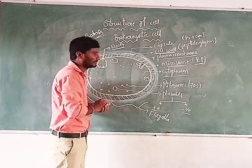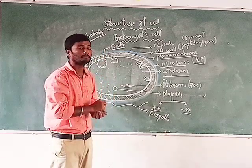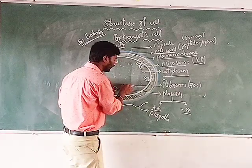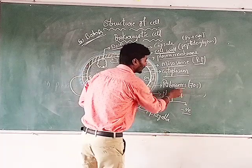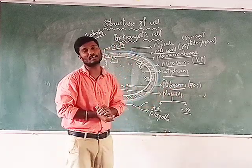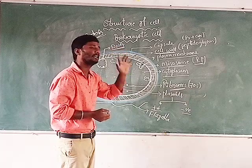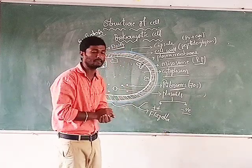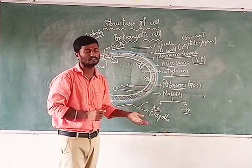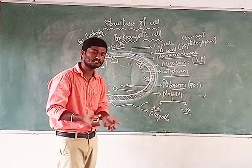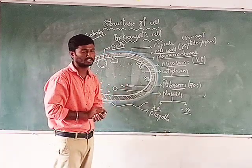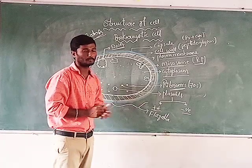In the cytoplasm, some granule-like dot-like parts appear — these are called ribosomes. 70S ribosomes are present in prokaryotic cells, and 80S ribosomes are present in eukaryotic cells. We will discuss later about the subunits of 70S and 80S ribosomes in the cell organelle topic.